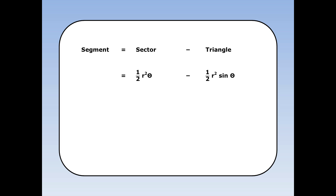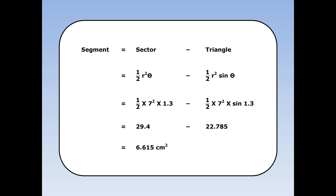The area of the sector is half R squared theta, where theta is in radians. The area of the triangle is half R squared sine theta. R is equal to 7 and theta is equal to 1.3 radians. This gives 29.4 take away 22.785, equals 6.615 centimetres squared.